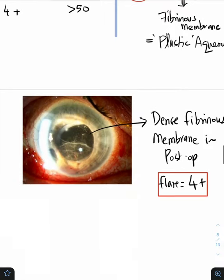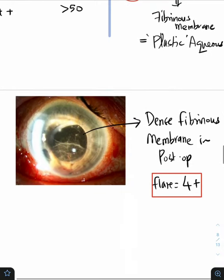So this is the picture of the dense fibrinous membrane in a post-op patient whose flare is 4 plus. You can appreciate this fibrinous membrane, this is what you call plastic hado cyclitis.